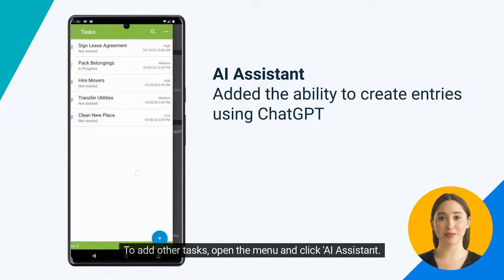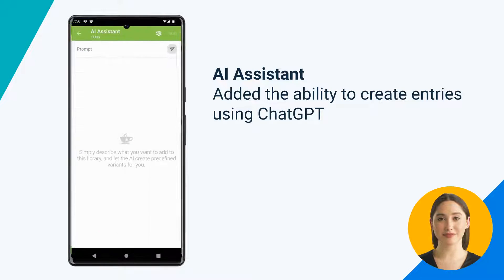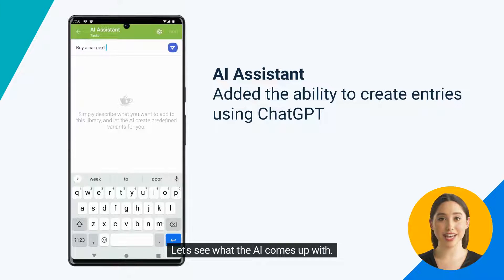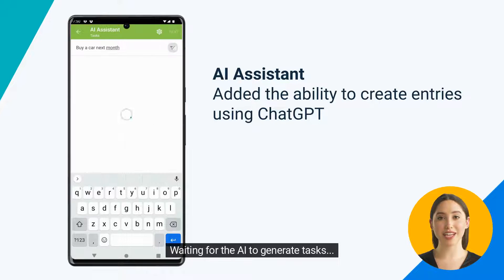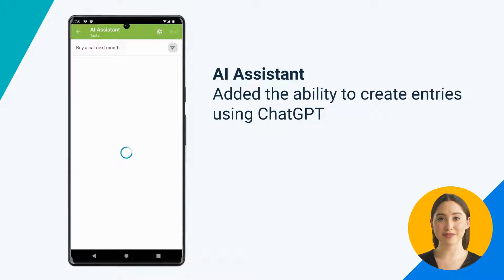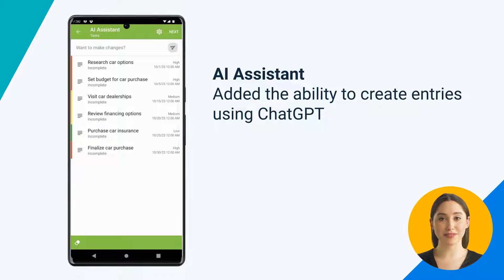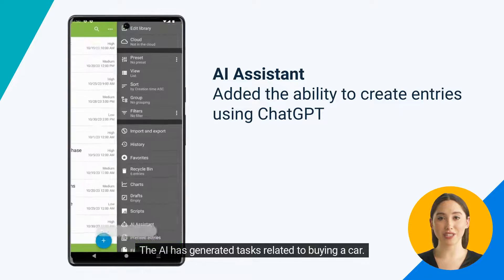To add other tasks, open the menu and click AI assistant. Now input a new task: "buy a car next month." Let's see what the AI comes up with. Waiting for the AI to generate tasks — it's working its magic. And here we go, the AI has generated tasks related to buying a car.